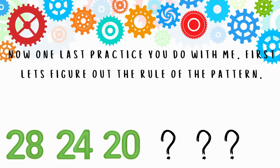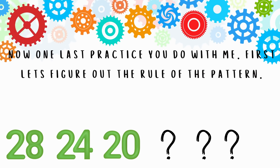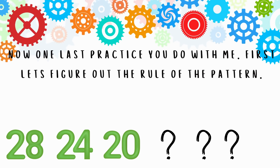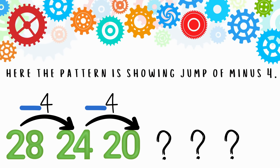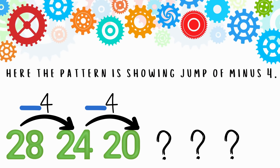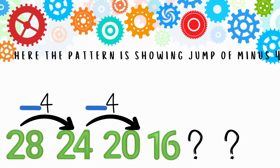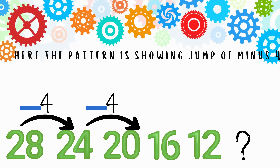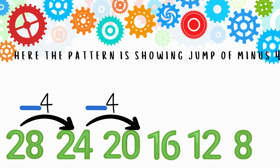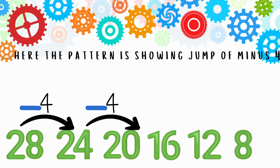Now one last practice — do this with me. First let's figure out the rule of the pattern. Here the pattern is showing a jump of minus four. Now let's complete the pattern: 20 minus four is 16, then comes 12, and 12 minus four is 8. Hope you have learned about patterns well!